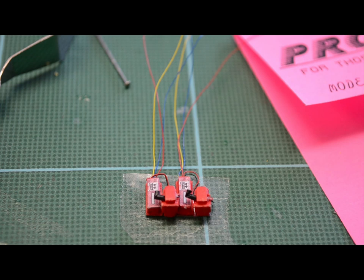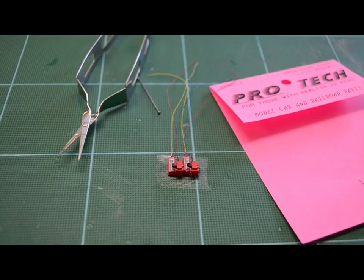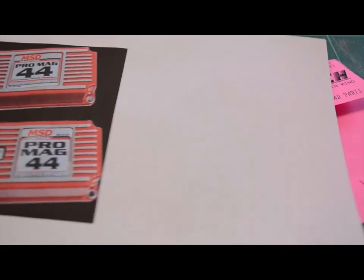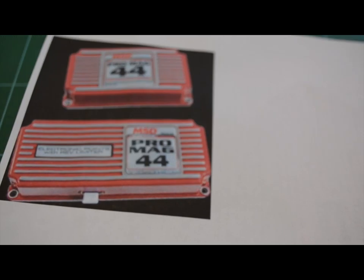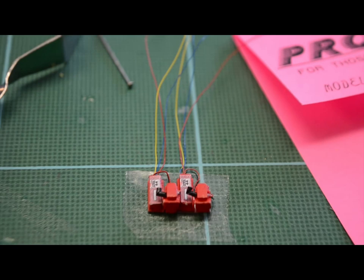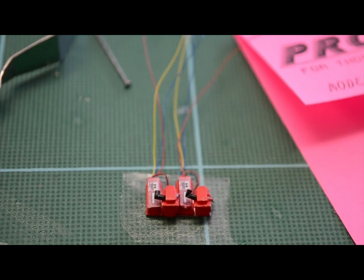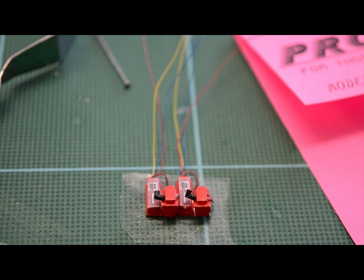And I happened to be looking on the internet and I saw a picture of a ProMag points box. And I just made a copy of it, kept reducing it until it fit my application. And so I put that on there. And I think that kind of adds a little more realism to it. So it's ready to go. I'm going to mount it on the frame now.